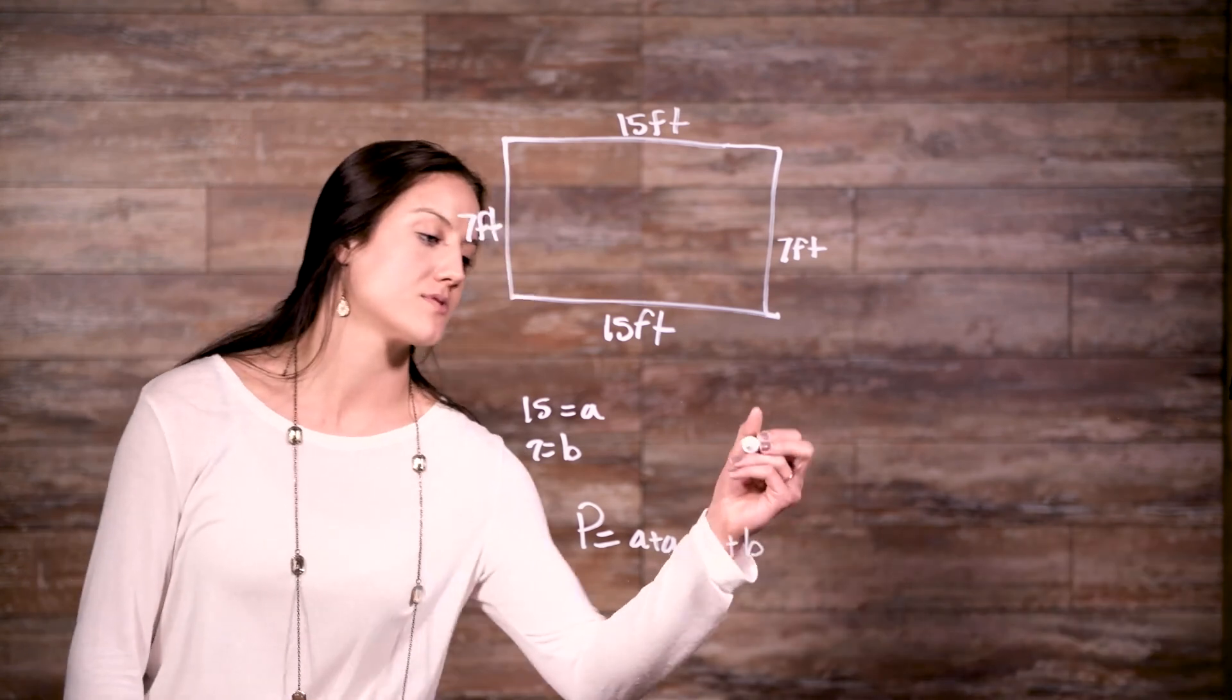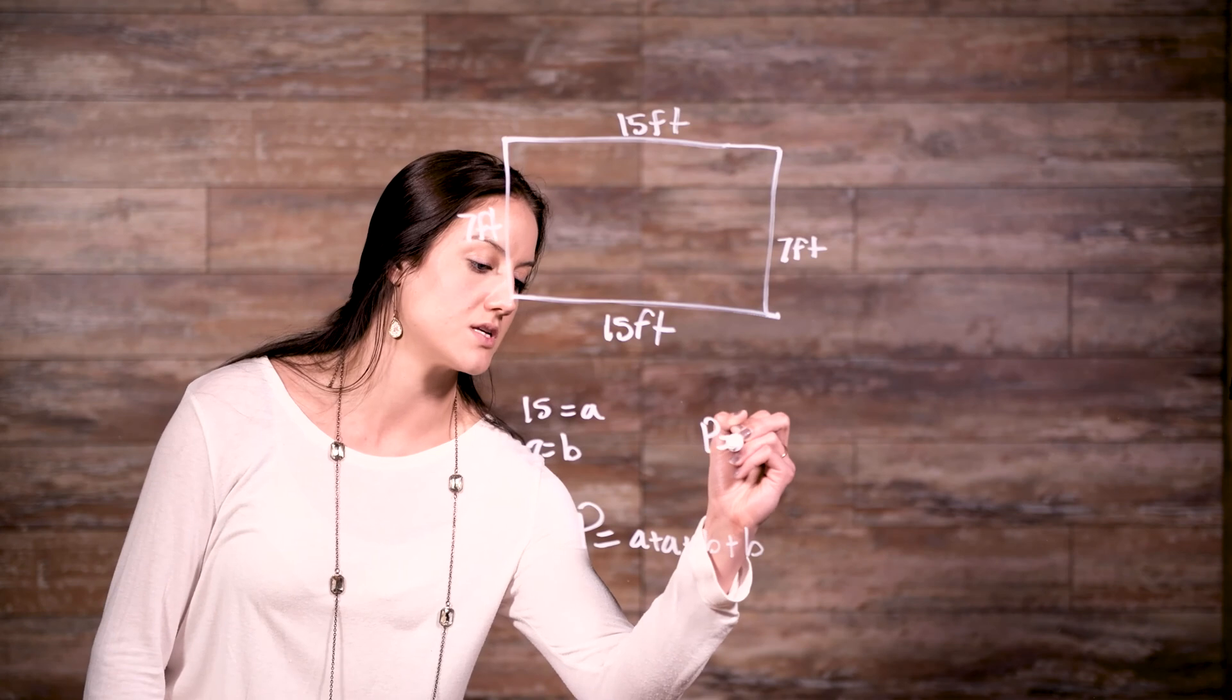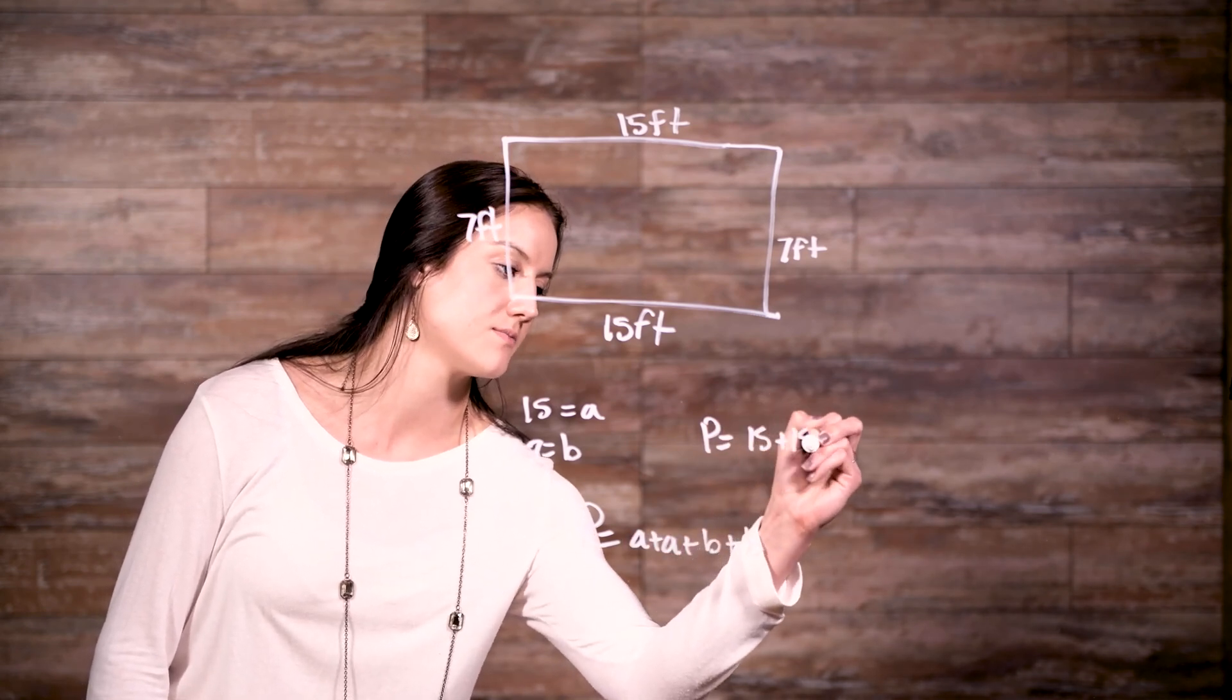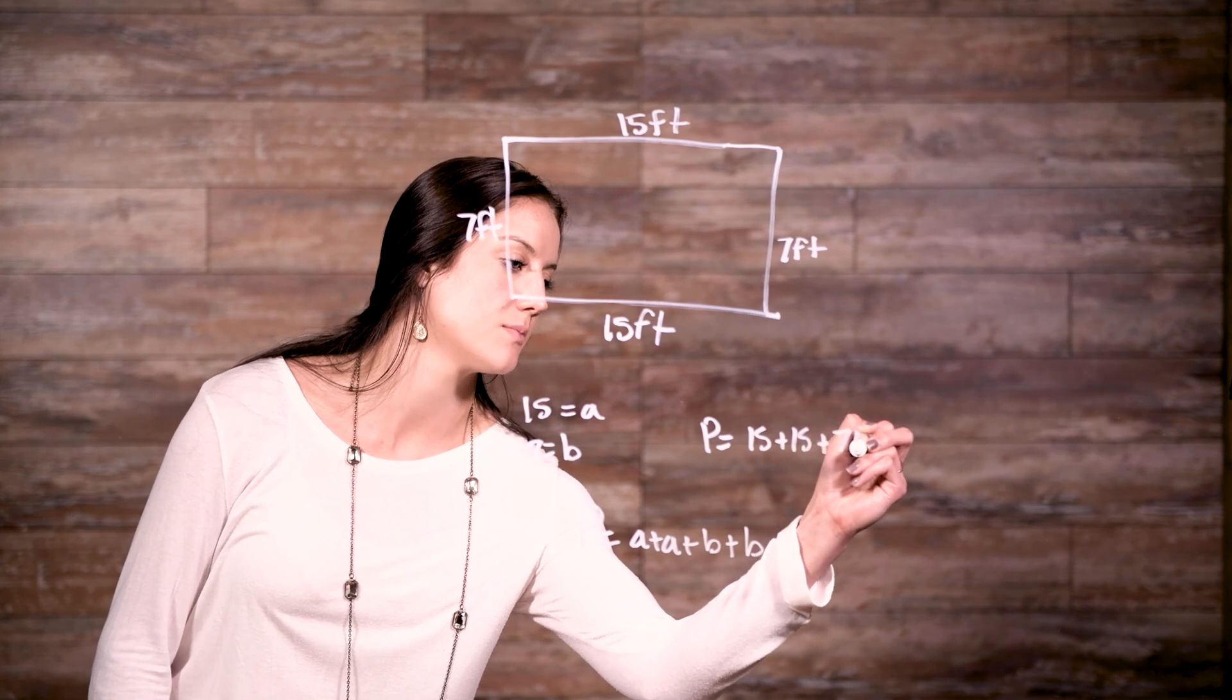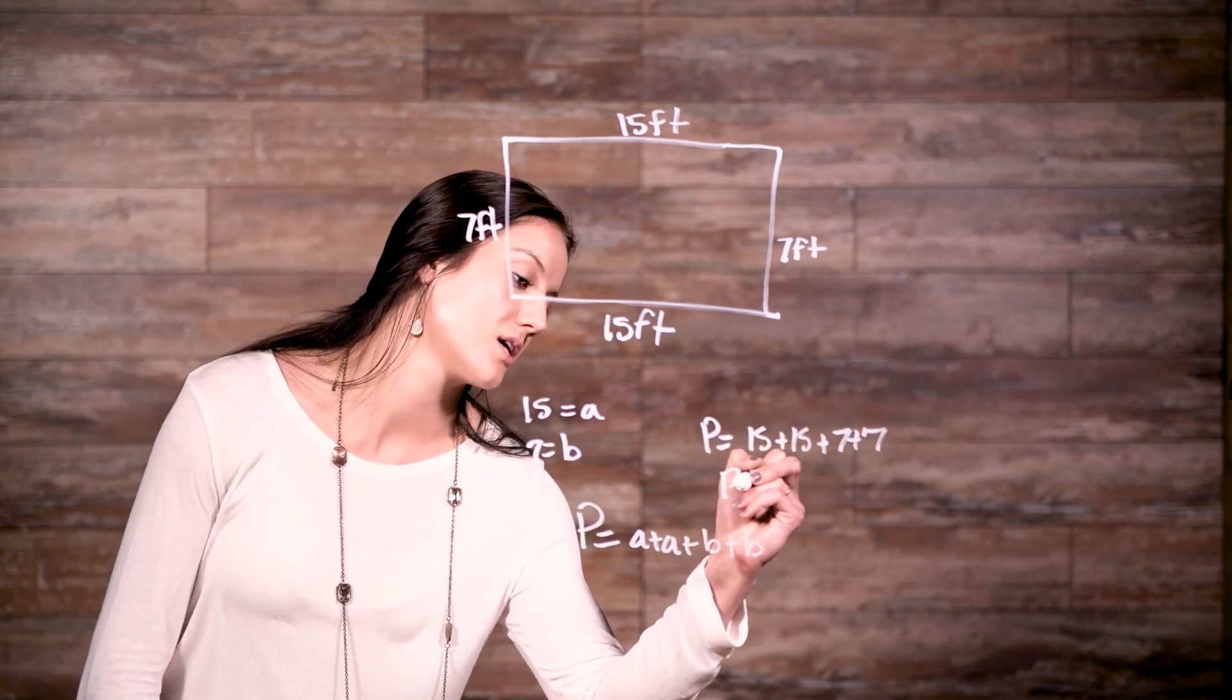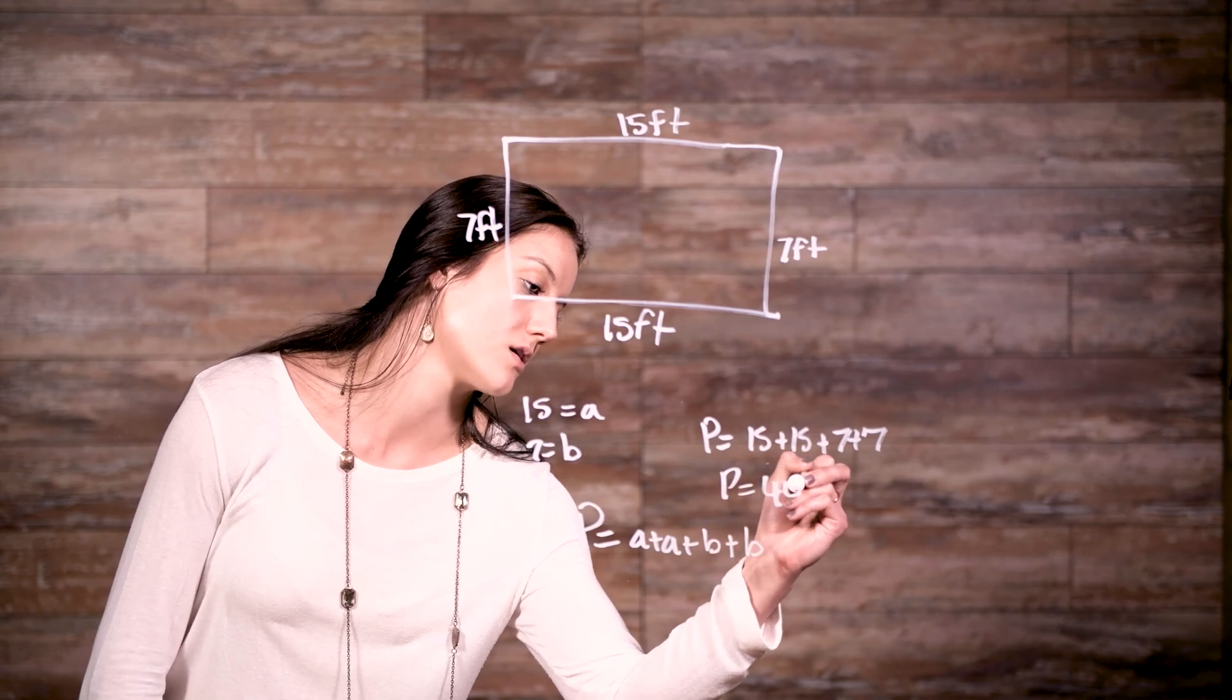Now let's plug in our numbers. So we have perimeter is equal to a, so that's 15, plus 15, plus 7, plus 7. So then we add it all up and we get our perimeter is equal to 44 feet.